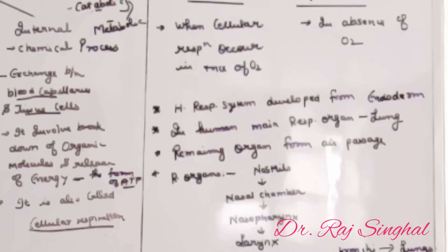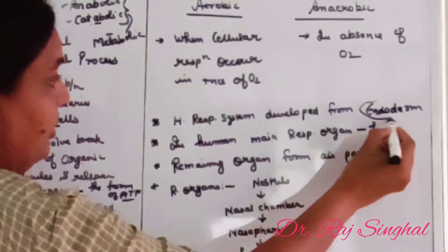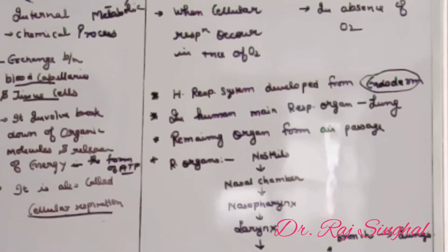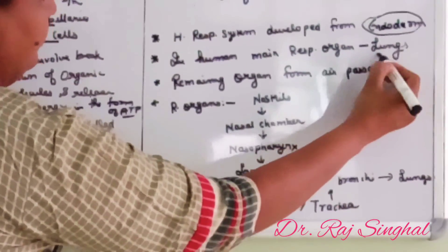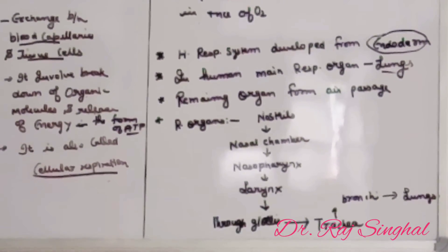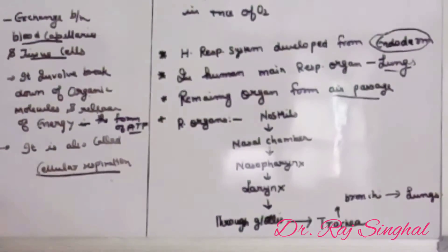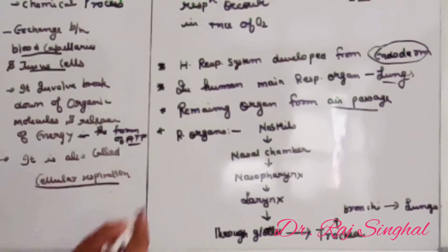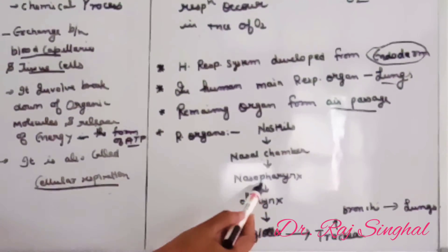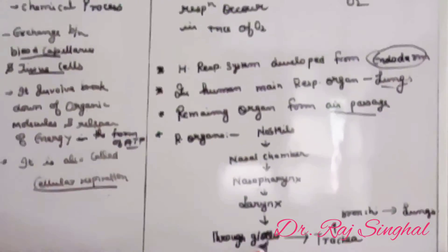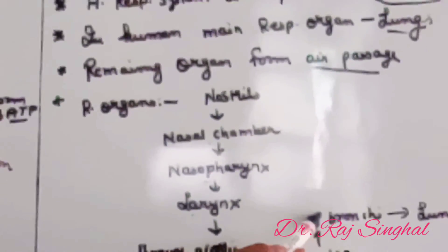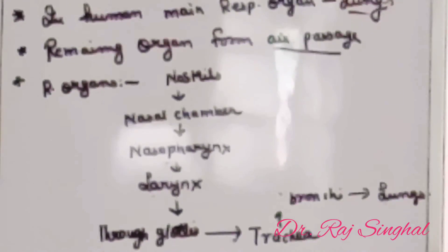The whole respiratory system is developed from the endoderm layer. In human beings, the main respiratory organ is the lungs. The other organs which support the lungs form the air passage. The respiratory passage includes the nostrils, opening into the nasal chamber, then to the nasopharynx, which opens into the trachea through the larynx and glottis, which finally leads to the bronchi, and the bronchi open into the lungs.